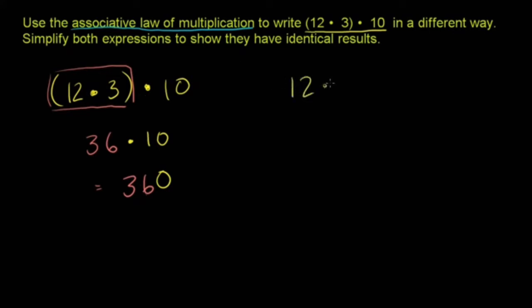If we were to do 12 times 3 times 10, if we just wrote it like this without parentheses, if we just went left to right, that would essentially be exactly what we just did here on the left. But the associative law of multiplication says, you know what? We can multiply the 3 times 10 first, and then multiply the 12. And we're going to get the exact same answer as if we multiply the 12 times the 3, and then the 10. So let's just verify it for ourselves.